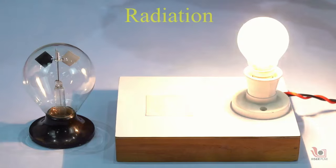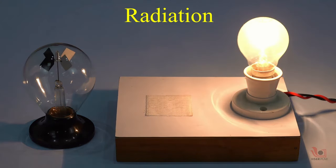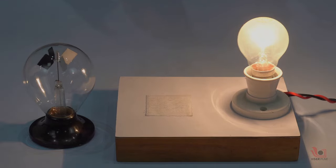In this radiometer, the vanes rotate when exposed to light, with faster rotation for more intense light, providing a qualitative measurement of electromagnetic radiation intensity.